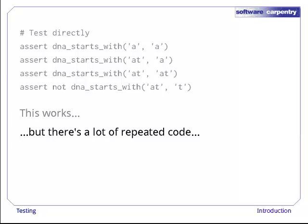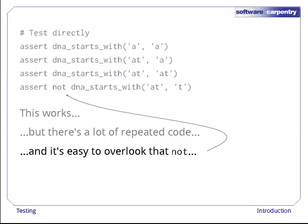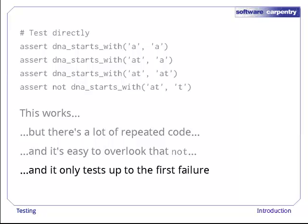Only a fraction of what's on each line is unique and interesting. That repetition makes it easy to overlook things, like the NOT used to check that the last test returns false instead of true. This code also only tests up to the first failure. If any of the tests doesn't produce the expected result, the assert statement will halt the program.